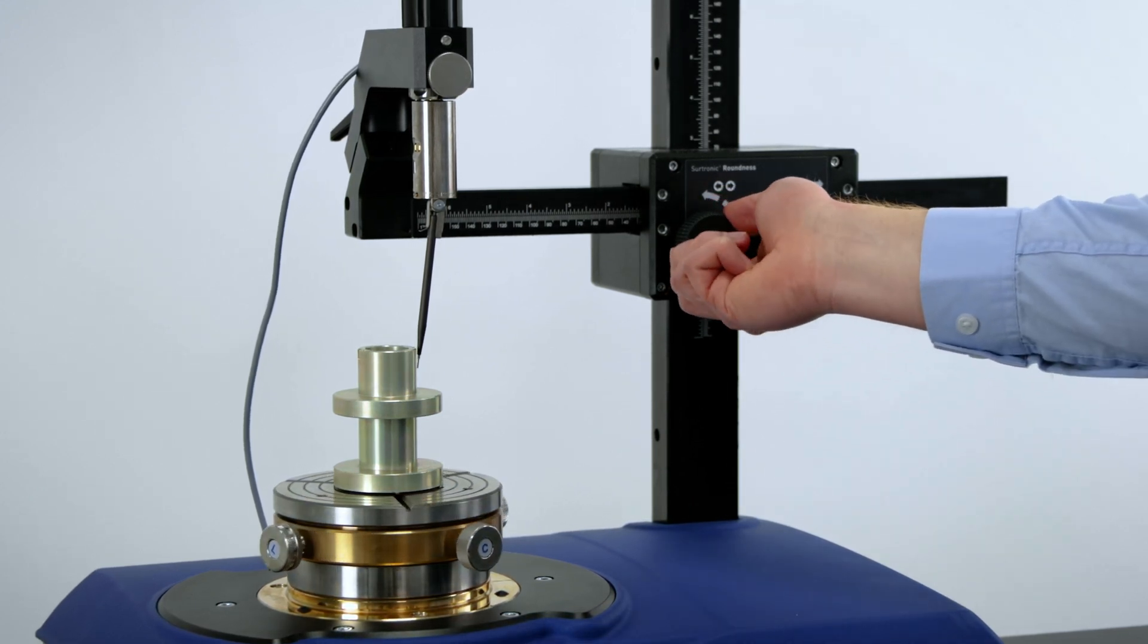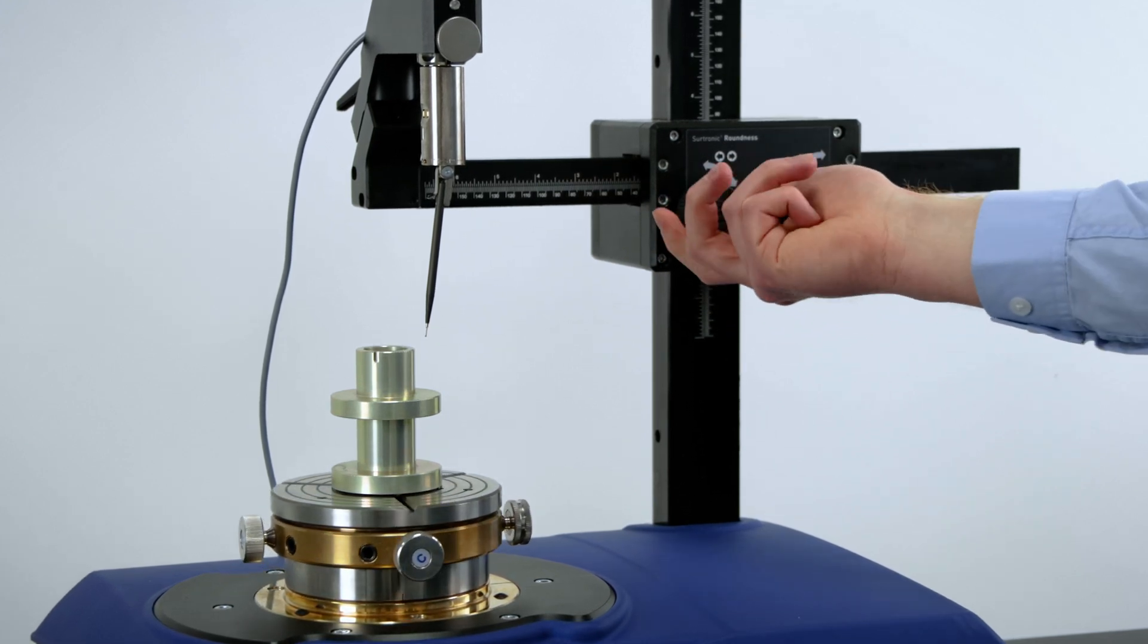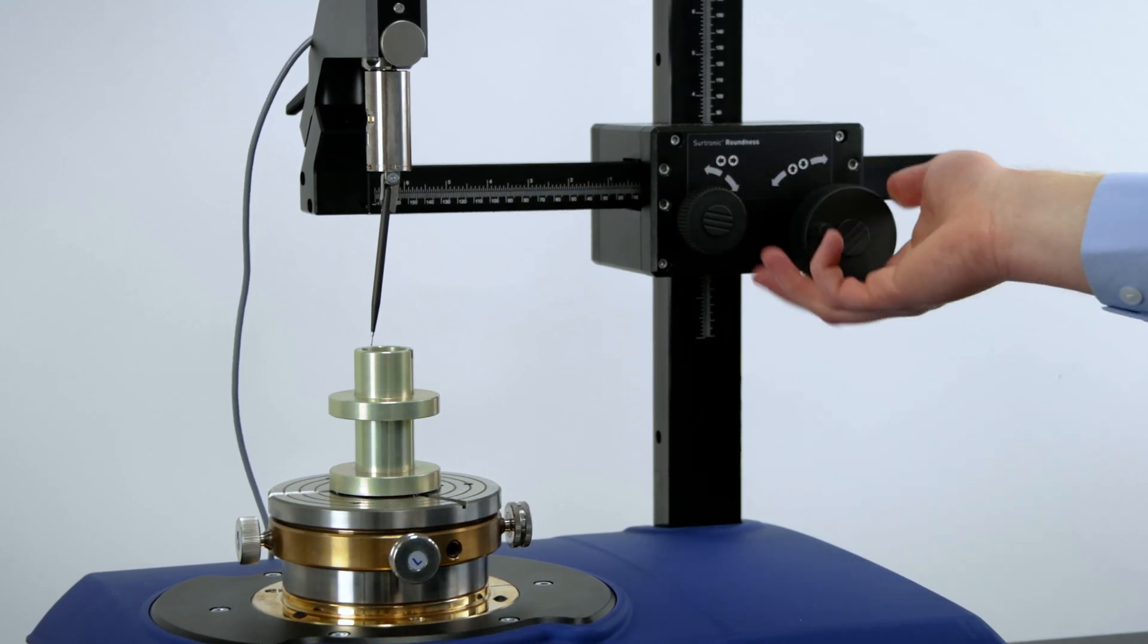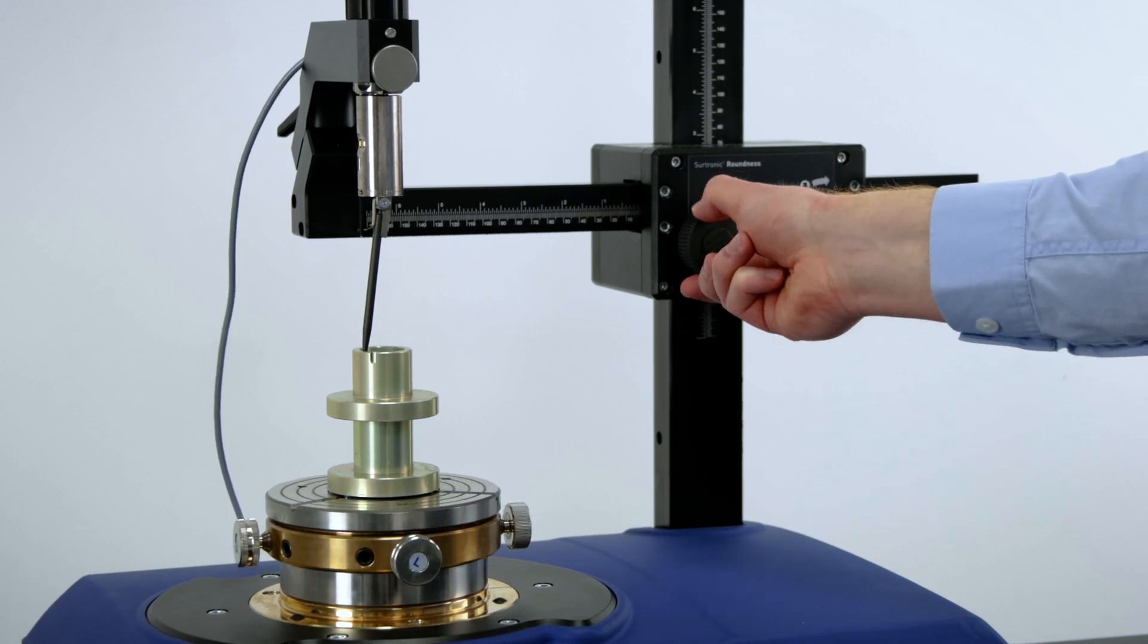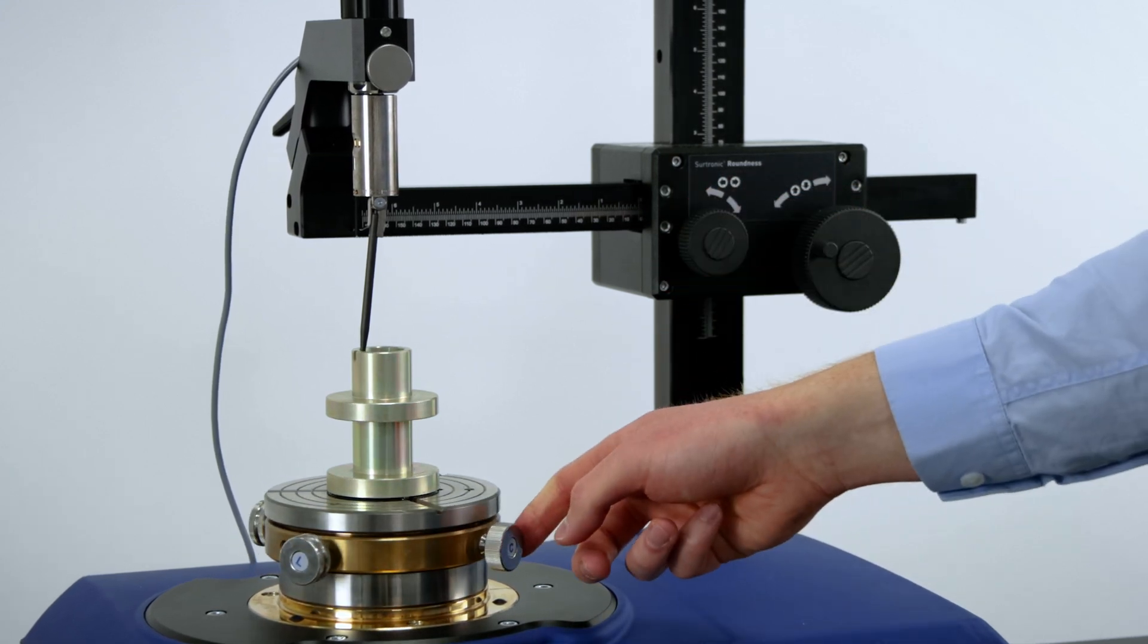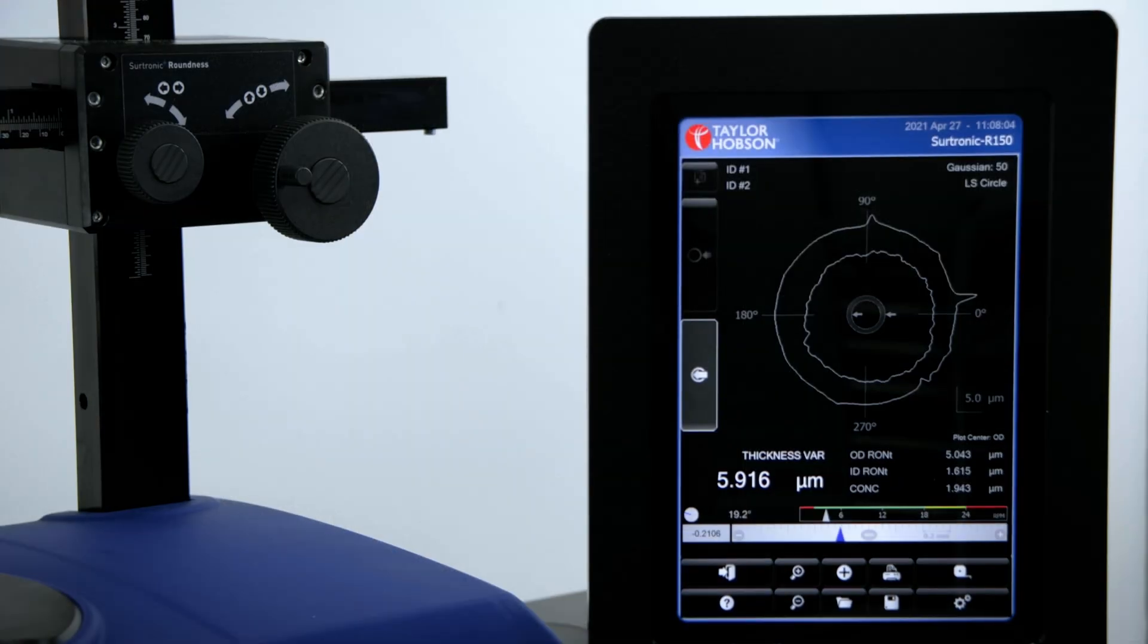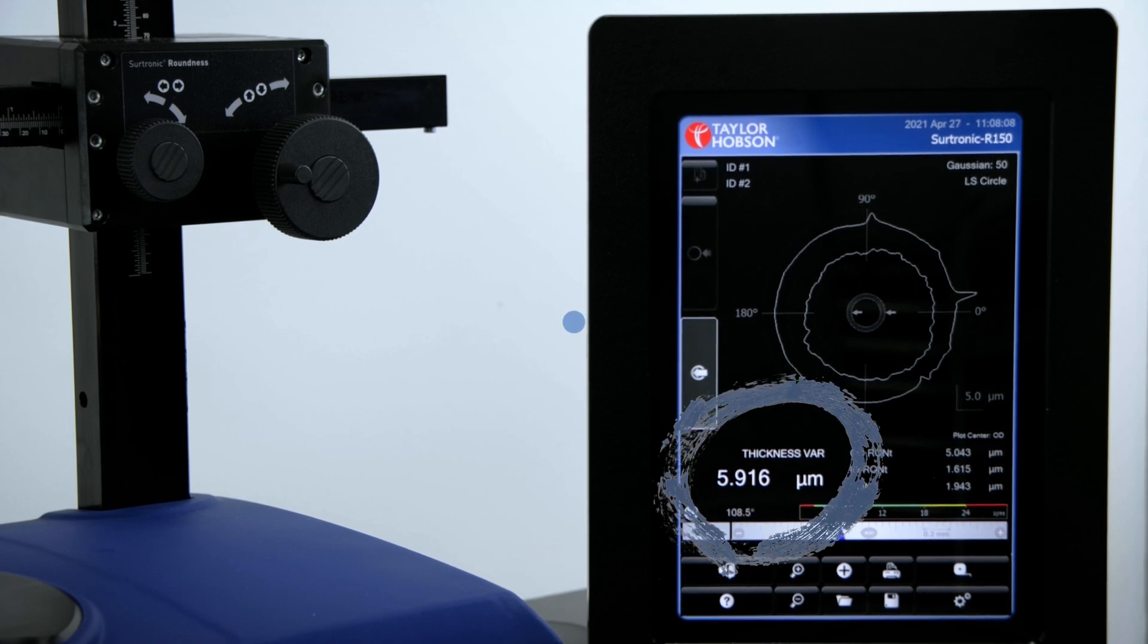Now it's time for the inside measurement, so I'm going to move off the surface and come above the part. I can now go into the inside, move down in contact, and take the second measurement. As you can see on the screen, we've got both measurements displayed and we can see the thickness variation.